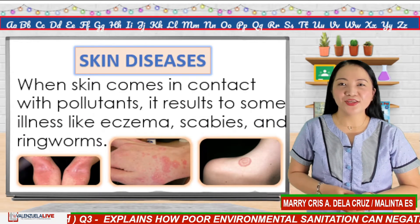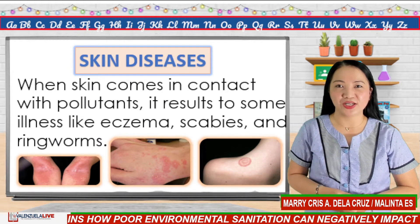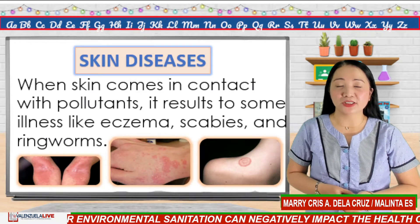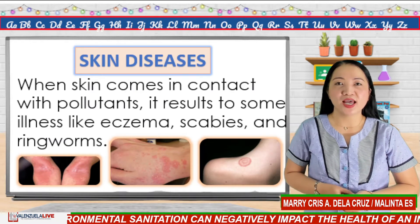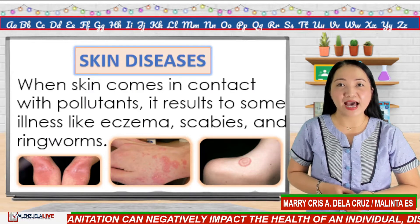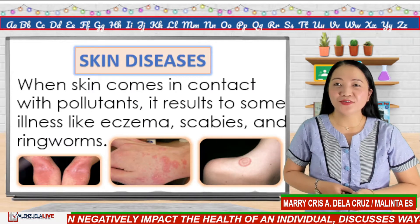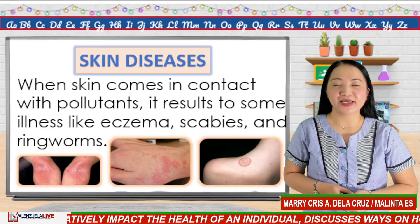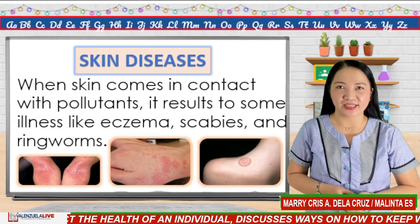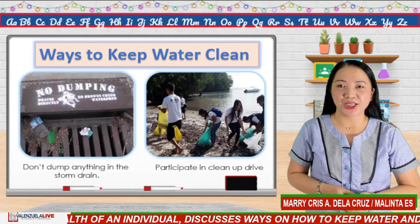Another disease caused by poor environmental sanitation is skin disease. When skin comes in contact with pollutants, it results in illnesses like eczema, scabies, and ringworms. You can avoid getting infected by any disease by being consistent with your daily health habits and personal hygiene practices.